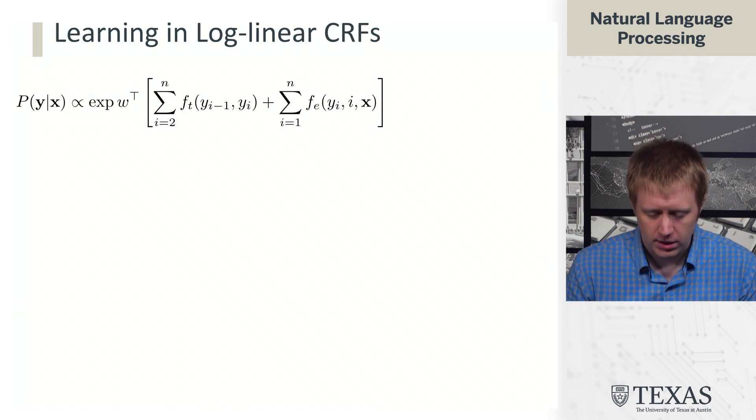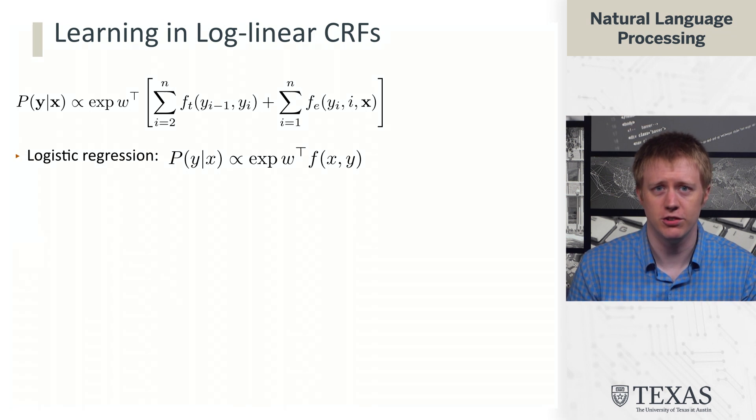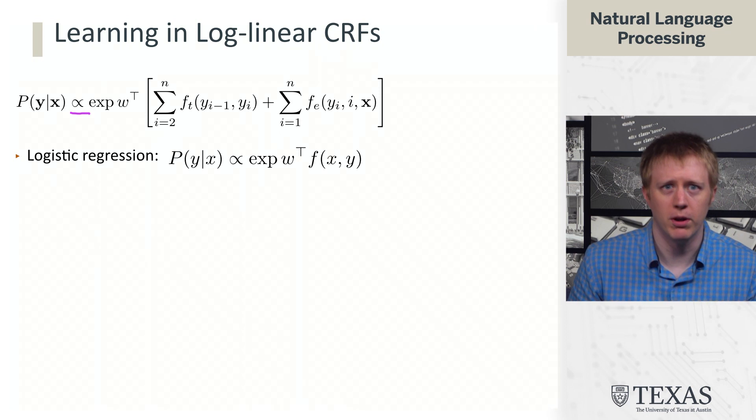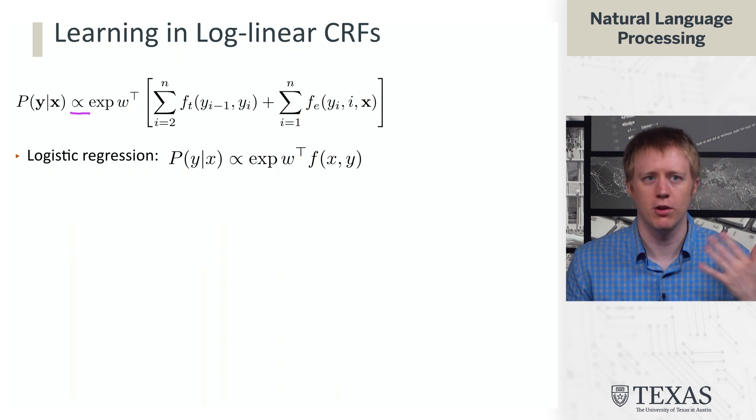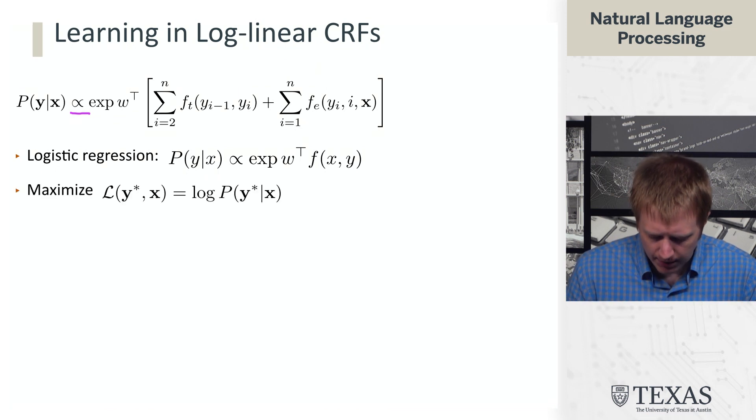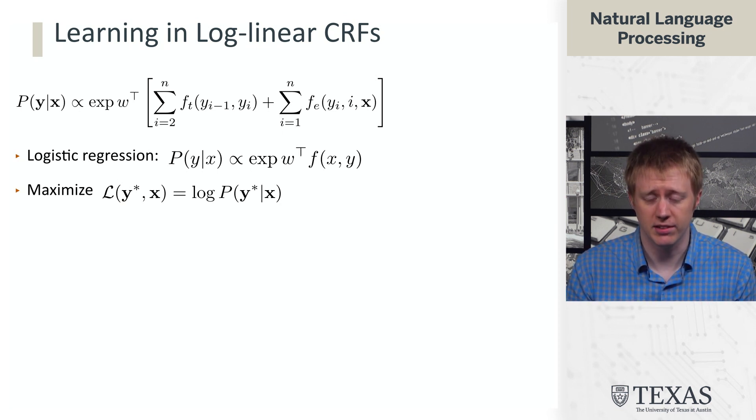So here's our distribution of Y given X. And we're going to draw an analogy to multiclass logistic regression, which looked like this. And so let me make it clear that this little kind of fish symbol or whatever is a proportional to symbol. So it means that we've omitted this normalizing constant Z here. But implicitly, in order to turn this into a probability distribution, you need to kind of sum over all the possible Ys.